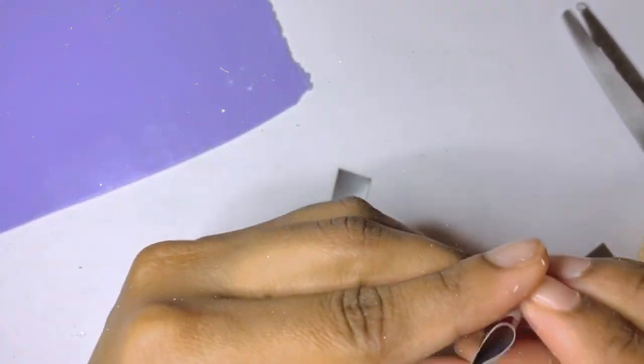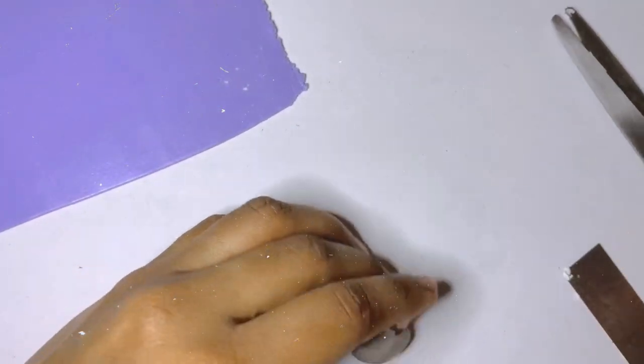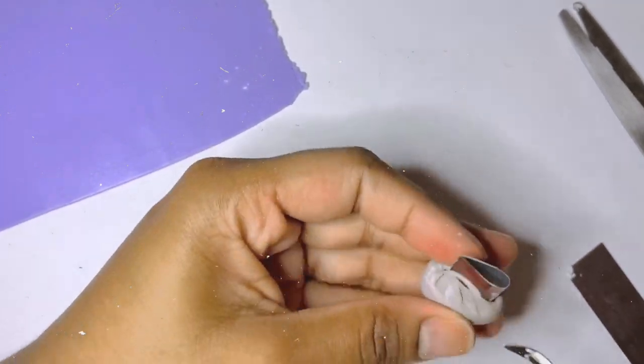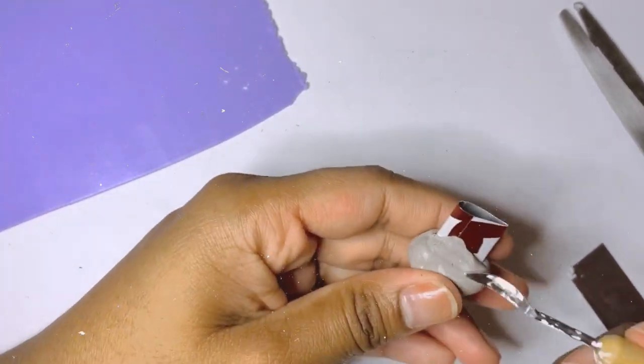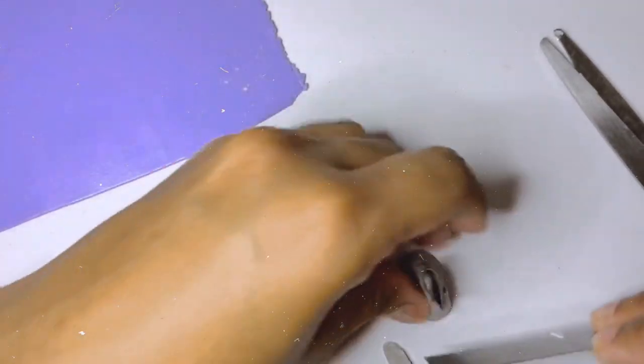Using a leftover bit of clay, I pushed my newly made cutter into it and then blended the sides in. I baked this piece about 20 minutes and let it cool down.